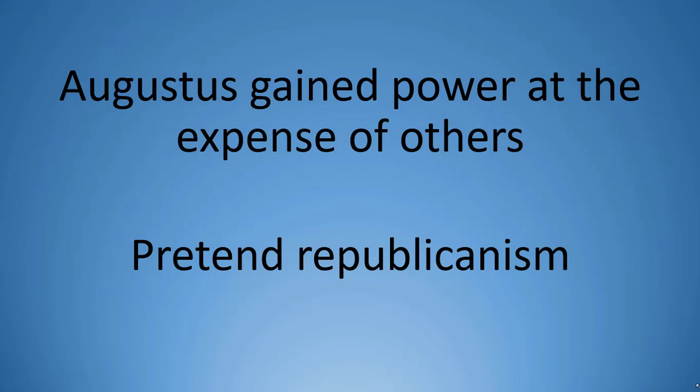During Augustus' long reign, he steadily gathered more power into his own hands at the expense of other state organs, particularly the Senate. A second trend, lasting until the second half of the first century, was that Augustus disguised this accumulation of power with the trappings of republicanism — he maintained the fiction that he was returning Rome to the height of the Republic, while in reality doing quite the opposite.